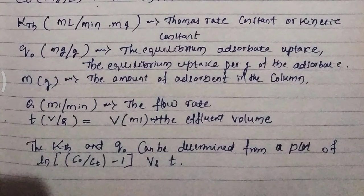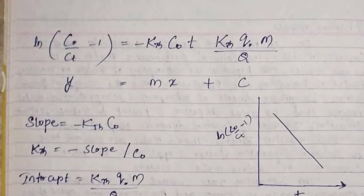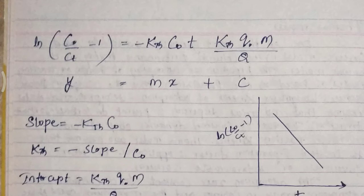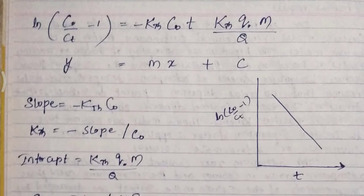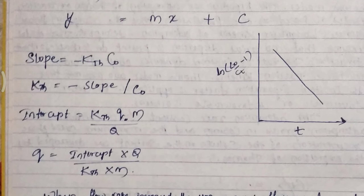The kth and Q0 can be determined from a plot of ln(C0/Ct − 1) versus t. The linearized equation is: ln(C0/Ct − 1) = −kth·C0·t + kth·Q0·m/Q. Taking y = mx + c, the t-axis is x and ln(C0/Ct − 1) is y. The slope is −kth·C0, so kth = −slope / C0. The intercept equals kth·Q0·m/Q, so Q0 = intercept × Q / (kth × m).